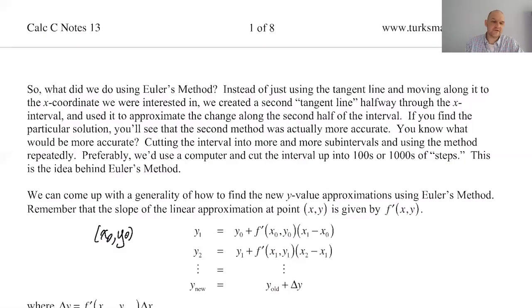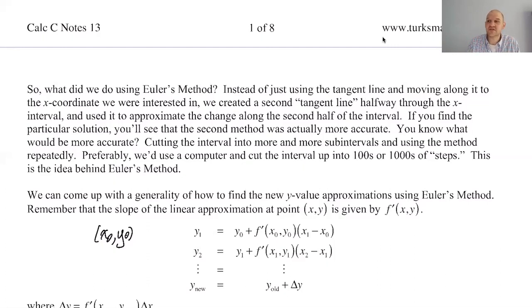We're back. We're in notes 13, page 2. We're talking about Euler's method. We saw that Euler's method is just using tangent lines over and over again, preferably on very small changes in x.